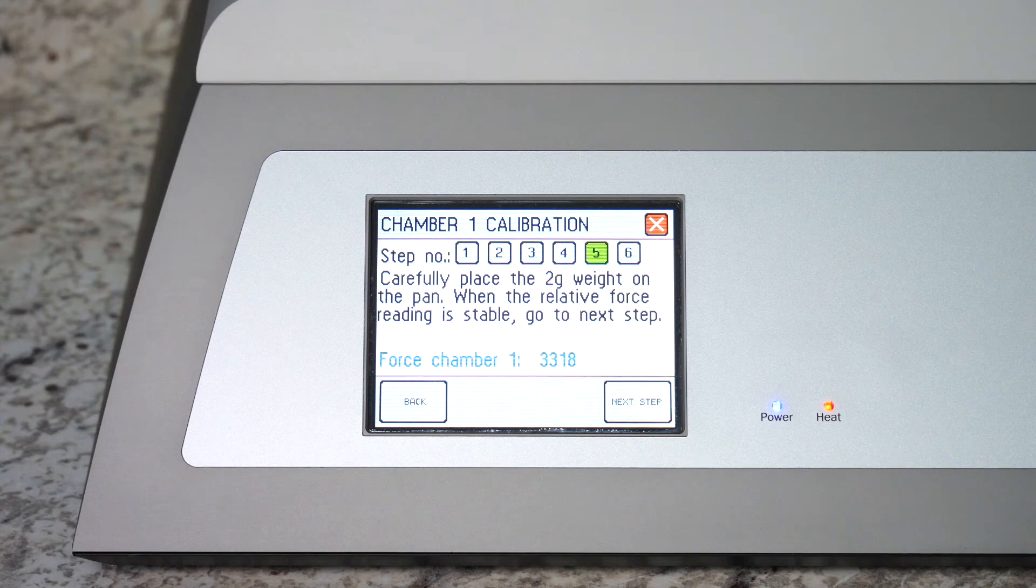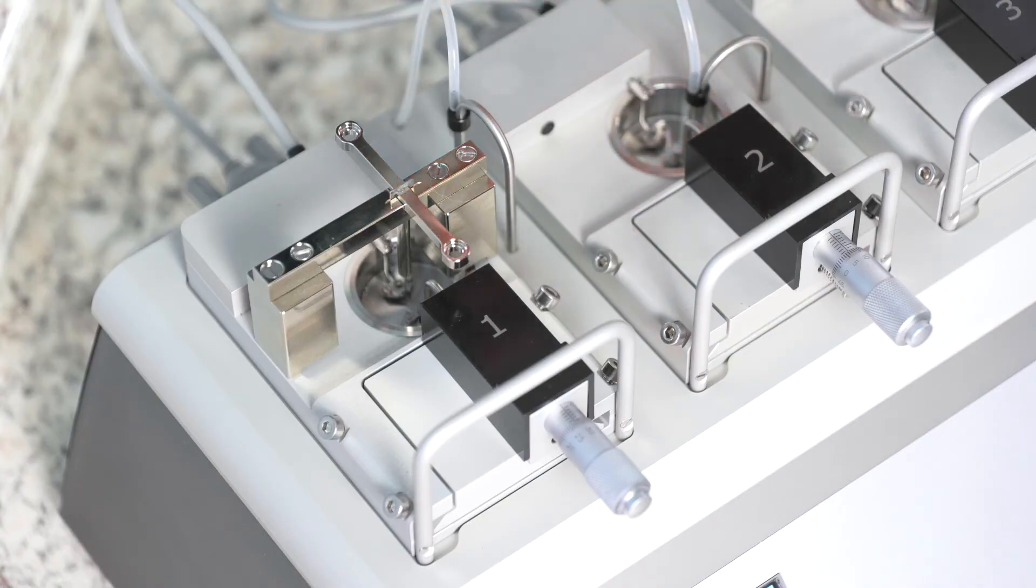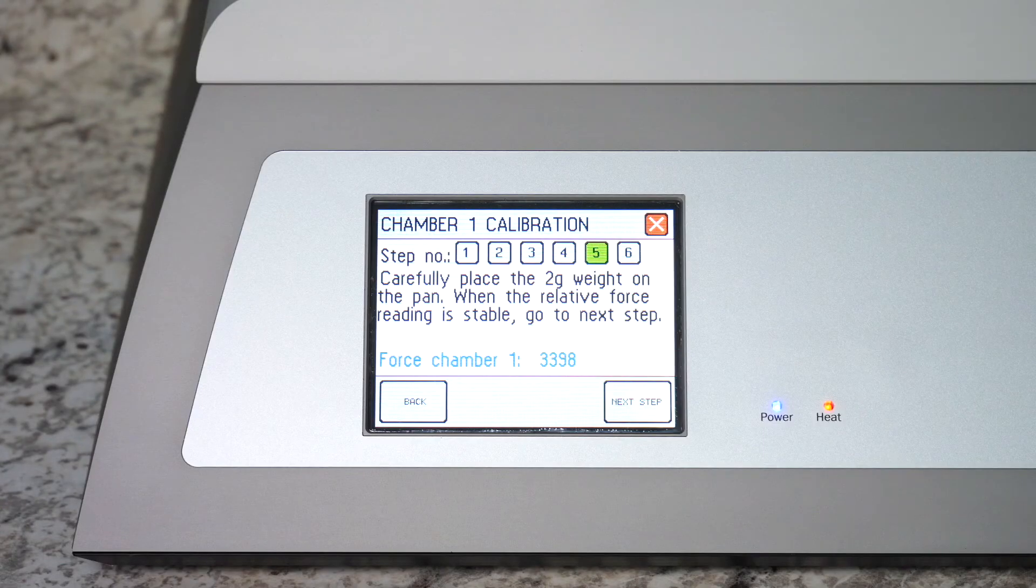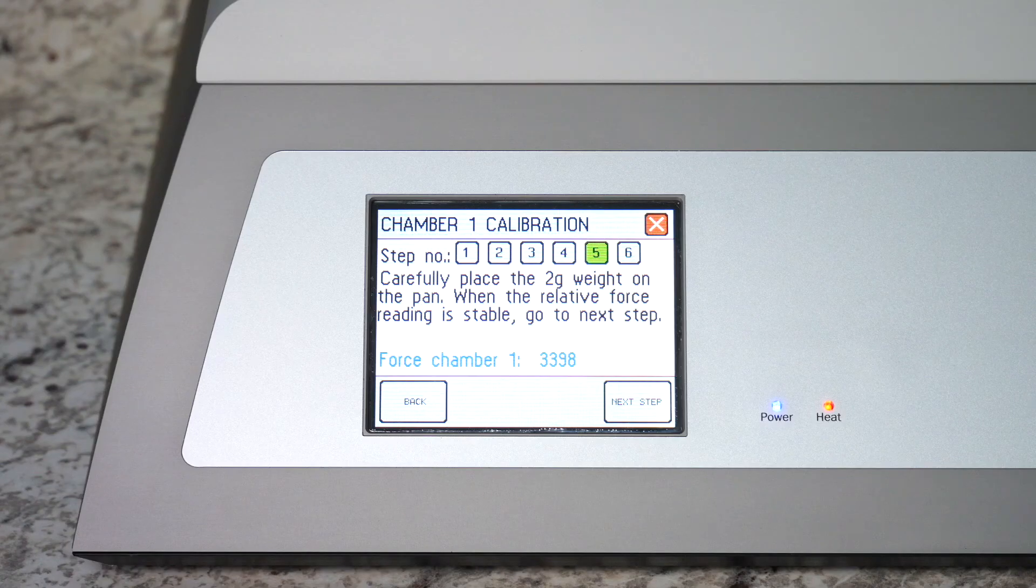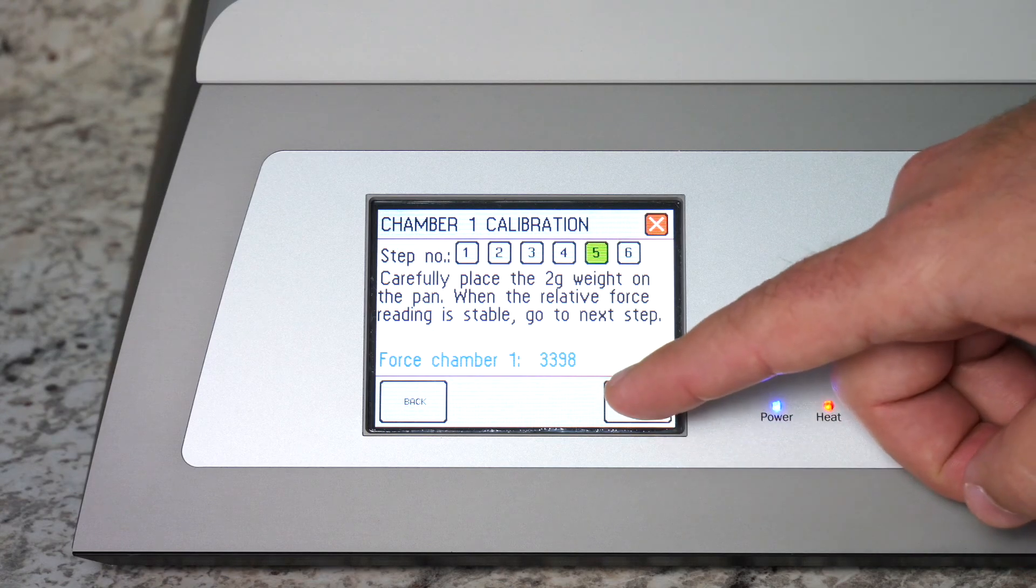Step five asks you to place the calibration weight on the pan. You will need to place the weight on the back pan to kick the bridge forward. After you add the weight give it about 10 or 15 seconds to stabilize, and then you can go to the next step.